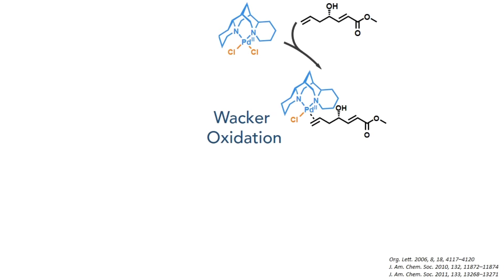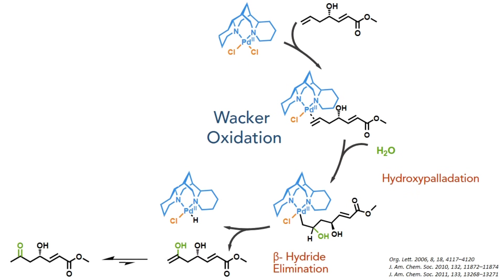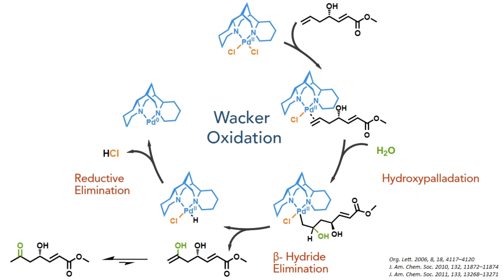Taking this compound forward, the allyl group was then subject to a Wacker oxidation. This was carried out using Sigman's modification, which utilises a palladium-sparteine complex, dimethylacetamide and water as solvents, and is carried out under an oxygen atmosphere. The palladium complex first coordinates to the more sterically accessible alkene, and the addition of water triggers an oxy-palladation process. A beta-hydride elimination then occurs, forming an enol that rapidly tautomerises to form the target ketone. Hydrochloric acid is then eliminated from the palladium complex, forming a palladium(0) species that is then reoxidised by oxygen present in the atmosphere to regenerate the palladium(II) starting complex.